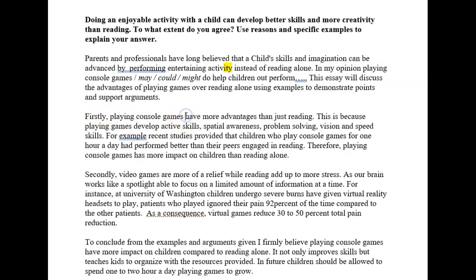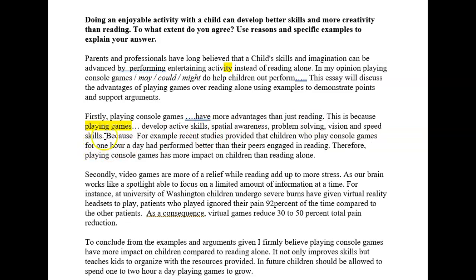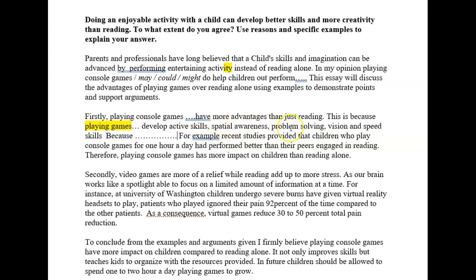Firstly, playing console games may - one of those modal verbs again - offer children more advantages than just reading. This is because - now we don't want to repeat 'playing games' because you've already used 'playing console games' - so you might say 'this is because participating or competing in such exciting challenges.' So active skills, spatial awareness, problem solving, vision and speed skills - that list is okay, but if you're going to list something, you need to develop it more. Why are you developing these skills? Why are you getting spatial awareness? To get a good band in IELTS - band 6.5 or 7 - you need to develop the argument.